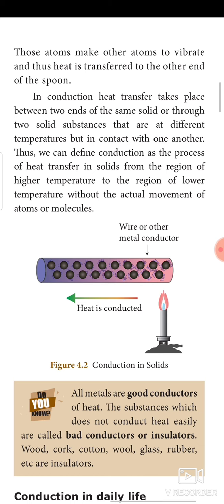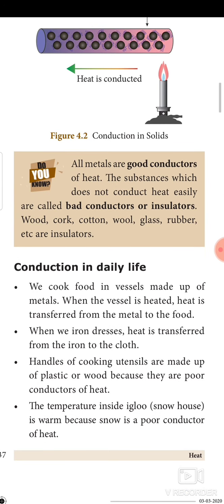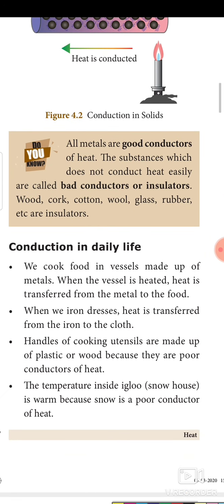All metals are good conductors of heat. Substances which do not conduct heat easily are called bad conductors or insulators — wood, cork, cotton wool, glass, rubber, etc. are insulators. In daily life: we cook food in vessels made of metals; when the vessel is heated, heat is transferred from the metal to the food. When we iron clothes, heat is transferred from the iron to the cloth. Handles of cooking utensils are made of plastics and wood because they are poor conductors of heat. The temperature inside an igloo is warm because snow is a poor conductor of heat.